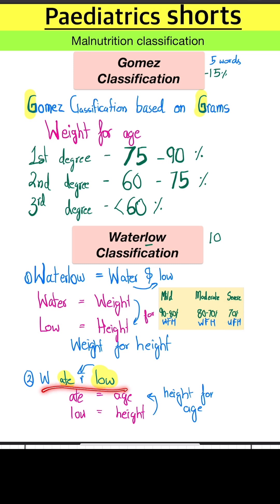Next in Waterlow classification, we use 'ATE' and 'low'. ATE is for age, low is for height. So it's also used for height for age.